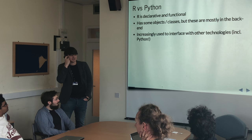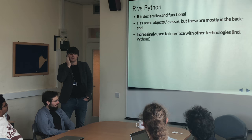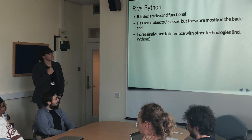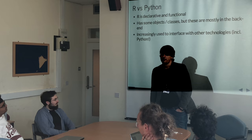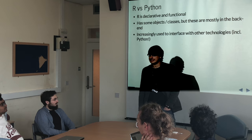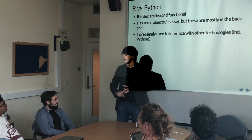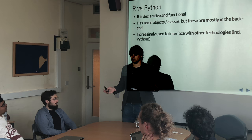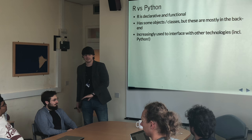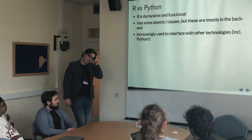It's declarative and functional. It does have some objects and classes, but these are often hidden. You can use R for years without realizing that you are interacting with an object or a class. And increasingly it is used to interface with other technologies, including Python — weirdly. At my last Google, there were somewhere in the region of 33,000 blog posts on whether R or Python is better for data analysis. In reality, you can use R and call Python.